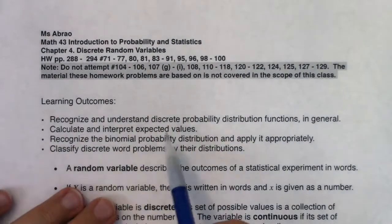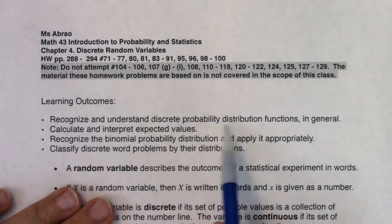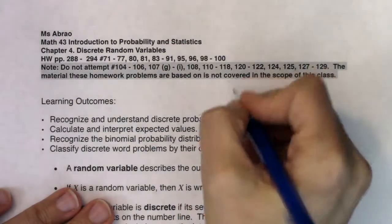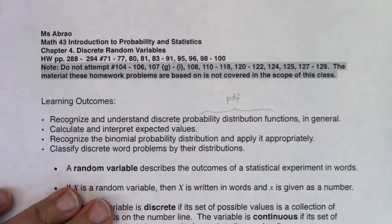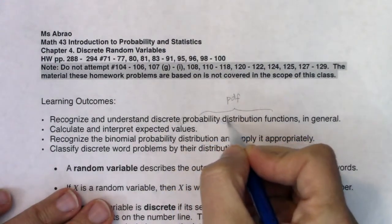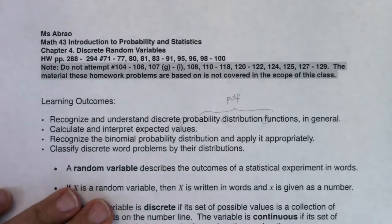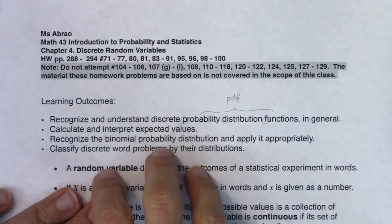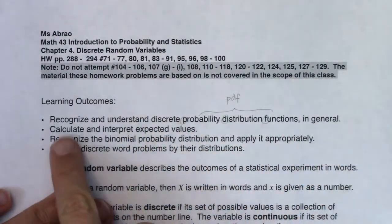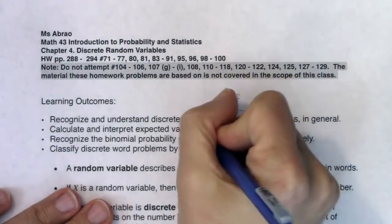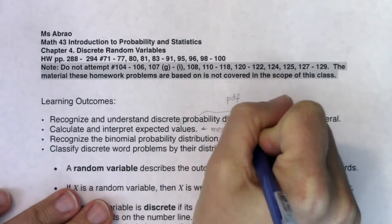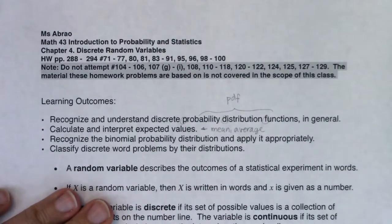In chapter 4, we're going to recognize and understand discrete probability distribution functions. When you hear me say probability distribution function, you're going to hear me talk about PDFs — PDF comes from probability distribution function. When you hear me say PDF, that's either going to be a table or the binomial distribution in chapter 4. Ultimately, it's either a table or a graph. We're also going to calculate and interpret expected values. When you hear the phrase expected value, that's another word for mean or average — so we're picking up a third vocab term that means mean and average: expected value.